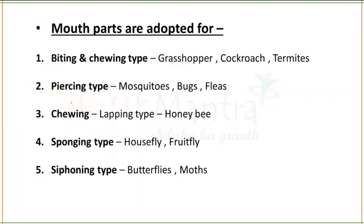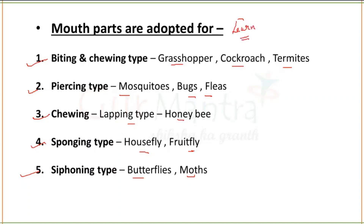Since about 2/3rd of all animal species are in this group, there are different kinds of mouth parts. Biting and chewing type are found in grasshopper, cockroach, and termites. Piercing type in mosquitoes, bugs, and fleas. Chewing or lapping type in honey bee. Sponging type in house fly and fruit fly. Siphoning type in butterflies and moths. Questions from here are very likely in exams.